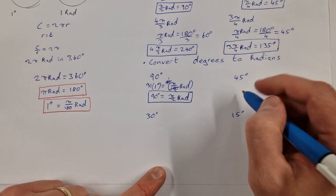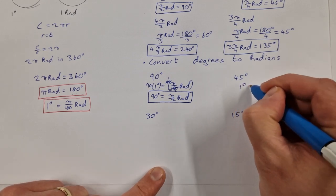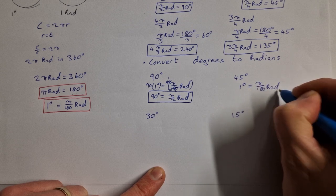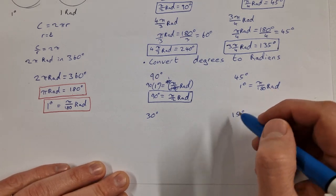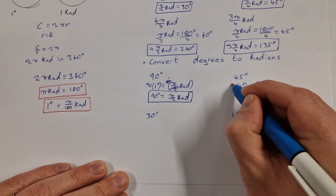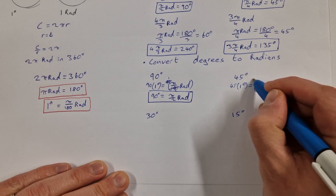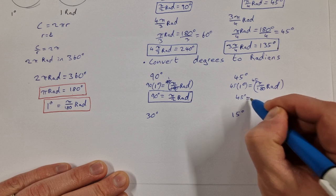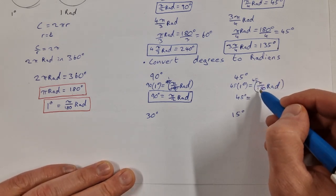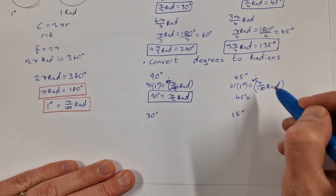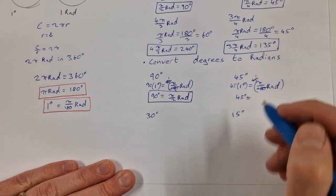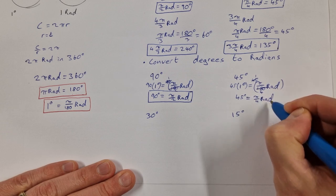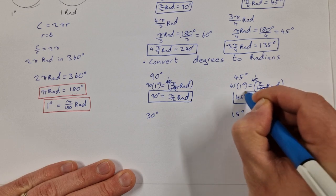What about 45 degrees? Starting with 1 degree equals π/180 radians, I multiply both sides by 45. That gives 45 degrees equals 45π/180. Dividing: 45 into 45 goes once, and 45 into 180 goes 4 times, so 45 degrees equals π/4 radians.